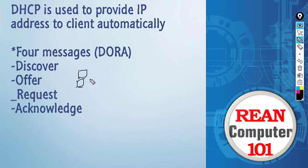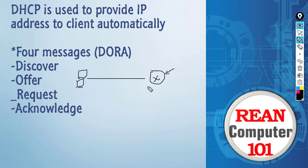I have a PC here acting as the DHCP client, going to connect to a router that's running the DHCP server inside. When this client wants to get an IP address from the server, it's going to send a DHCP Discover message to the server. This message means: hey, is there any DHCP server out there?